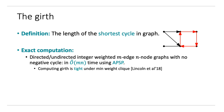Under popular hardness hypotheses from fine-grained complexity, like min-weight clique, this computation is tight up to N to the little O of 1 factors, both for sparse and dense graphs.